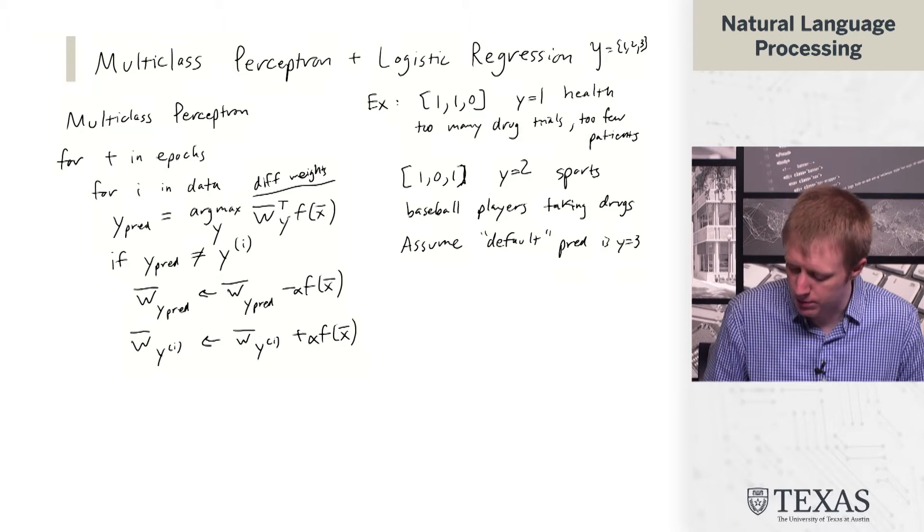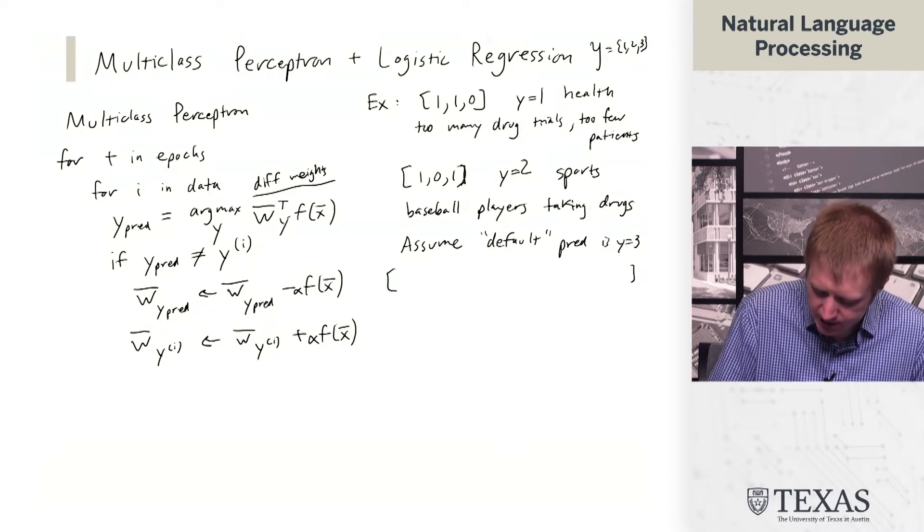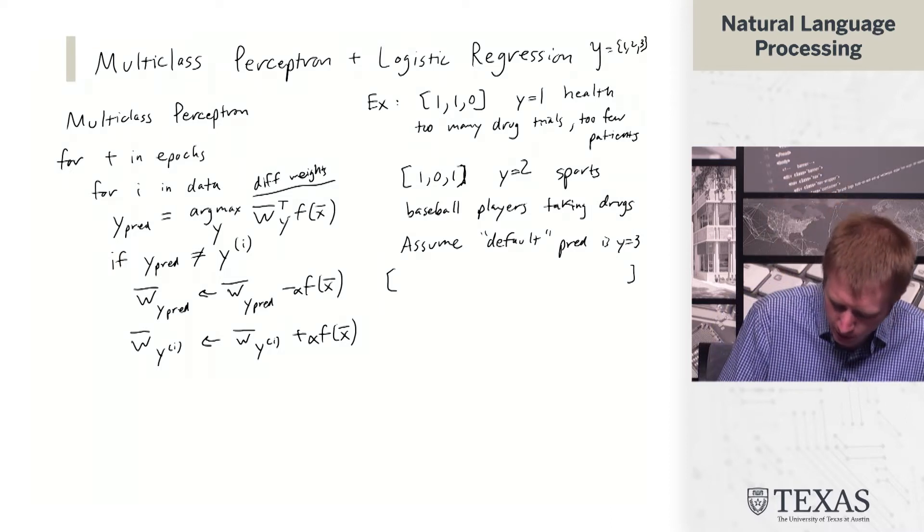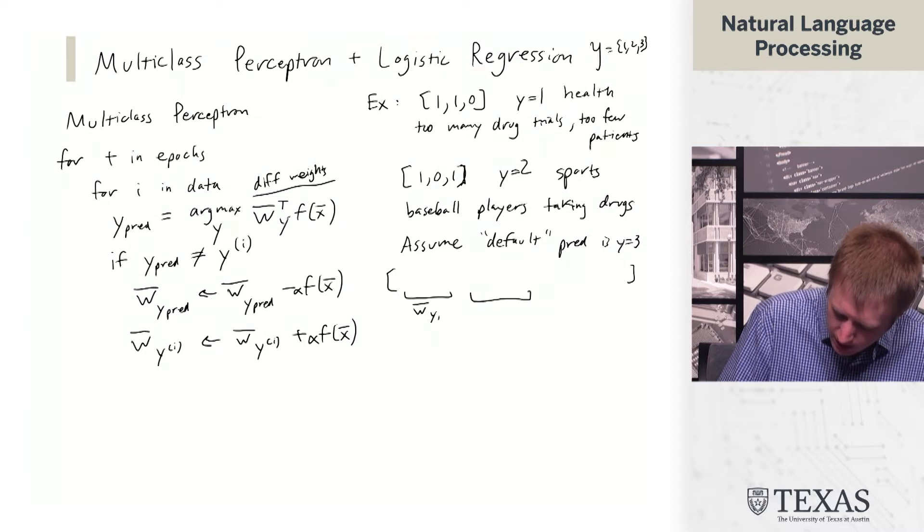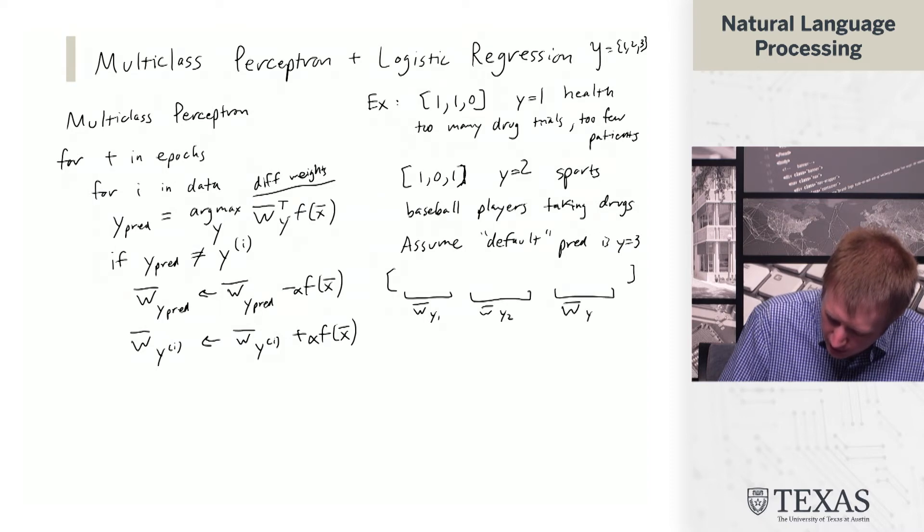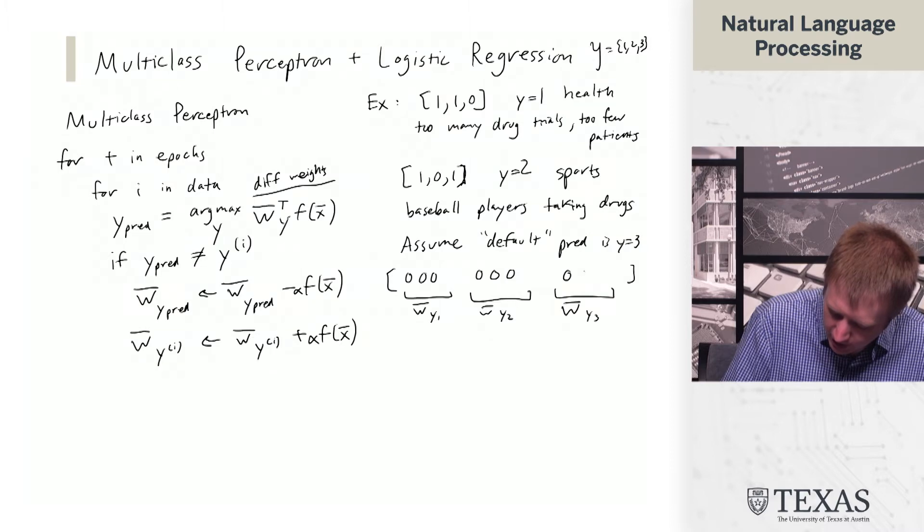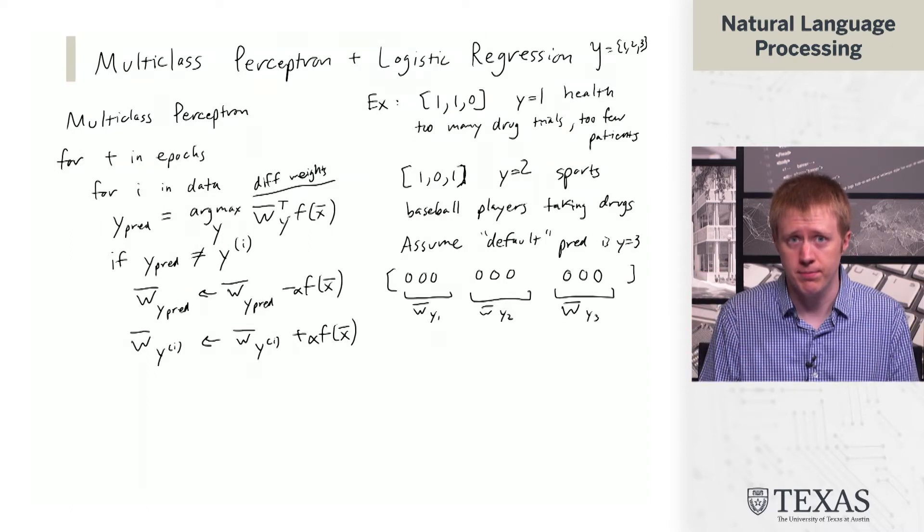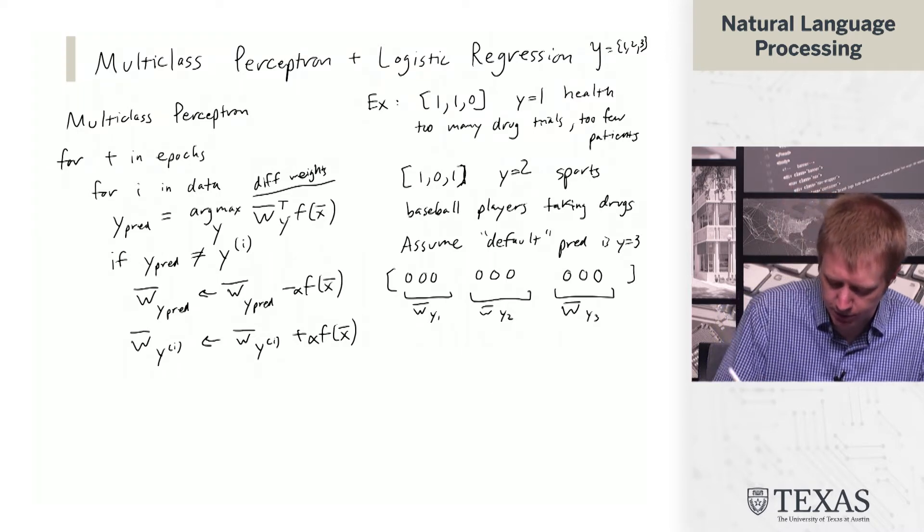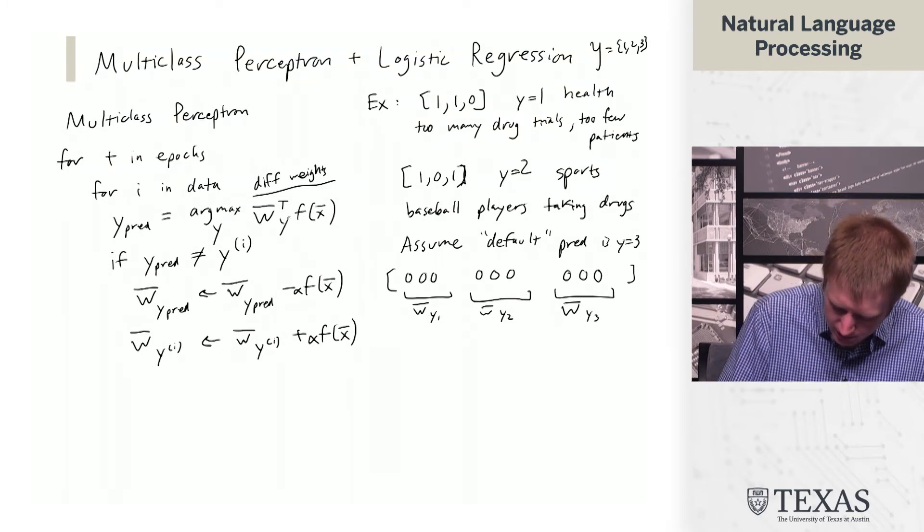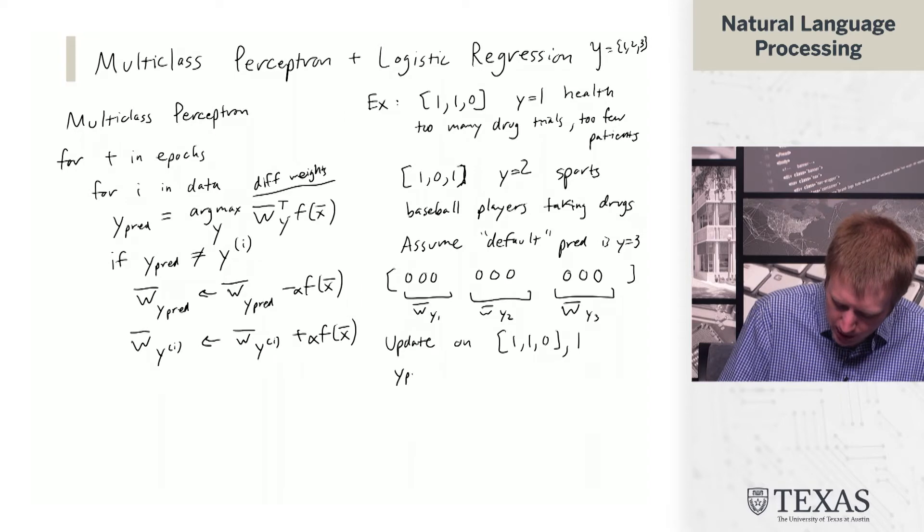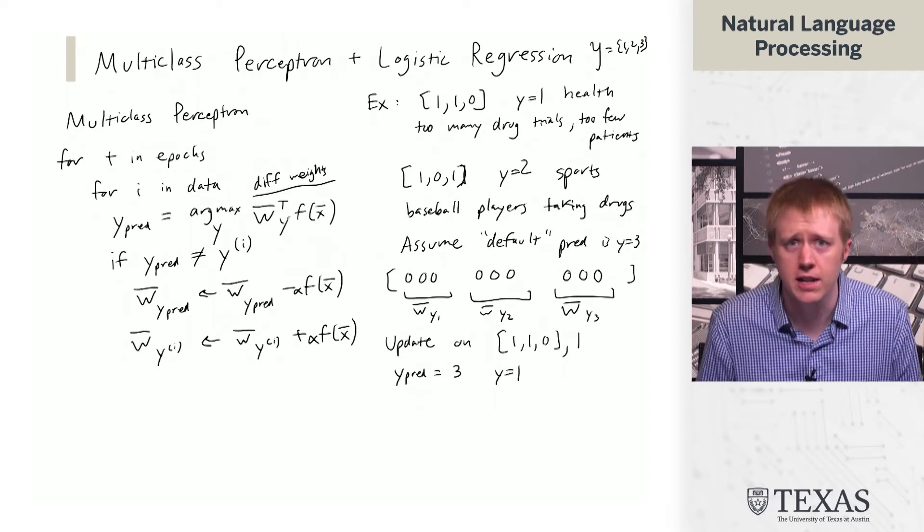And so what's going to happen when we execute this algorithm? Well, we start off with a set of weight vectors. And I'm just going to write them all kind of in a line here. So again, kind of different features and different weights sort of look similar. So the way I'm going to do this is I'm going to write wy1, wy2, and wy3 all here. And it's going to start off with all zeros. So if the default prediction is y3, then what happens is we have, when we come to the first example here, so we're going to update on this 1, 1, 0, comma 1 example.